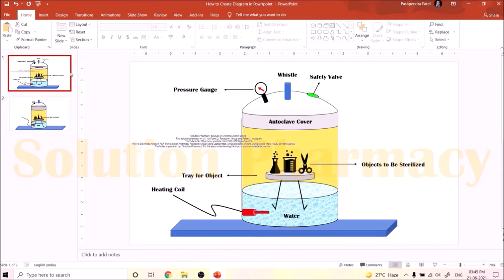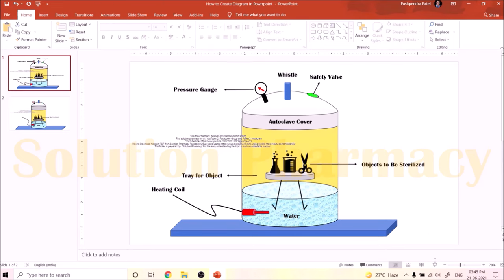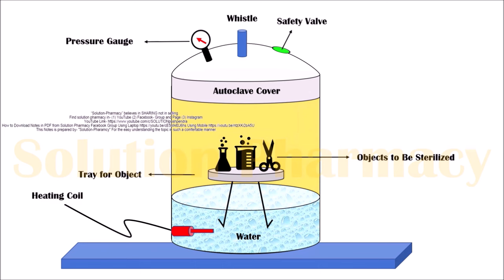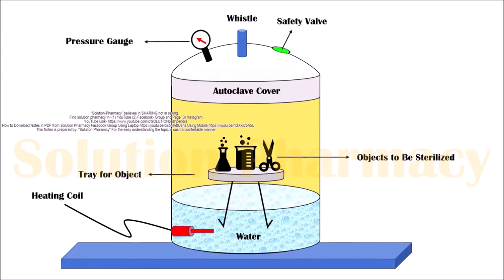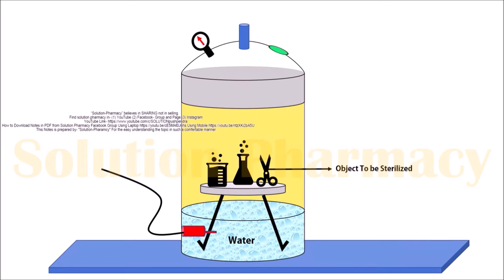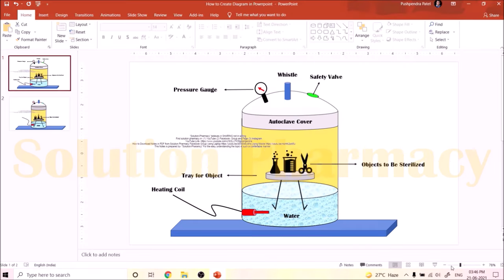As you can see, we have prepared exactly the same diagram of the autoclave as shown earlier — the only difference is the diameter: the second diagram is narrower and the first one is wider. This is how we can make a simple diagram using PowerPoint. In the second part of the video, we will show you how to add animation to this diagram. Thank you very much for watching.